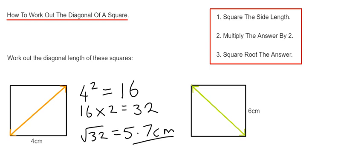This one has a side length of 6 centimeters. If we square the 6, so 6 squared is 6 times 6, which is 36, we're then going to multiply the answer by 2, which is 72. And then our final step is to square root 72.